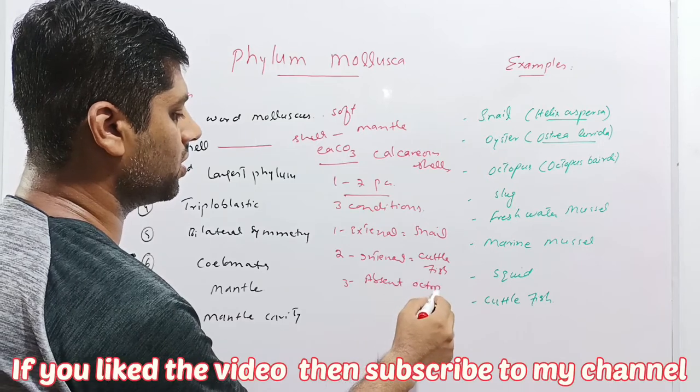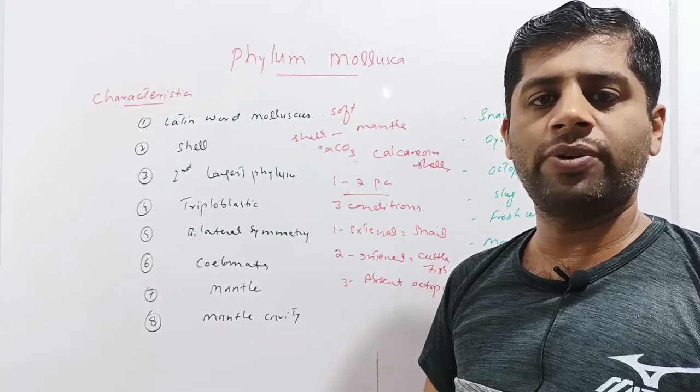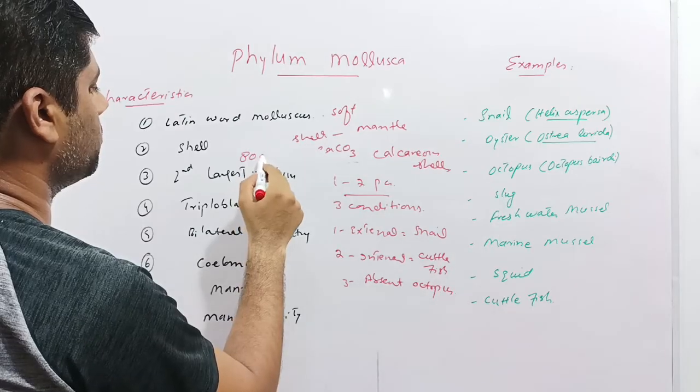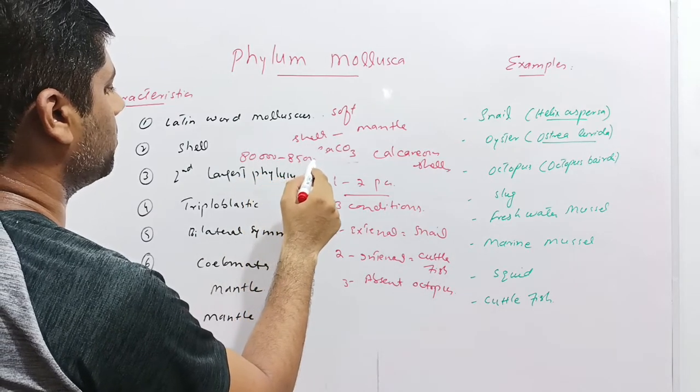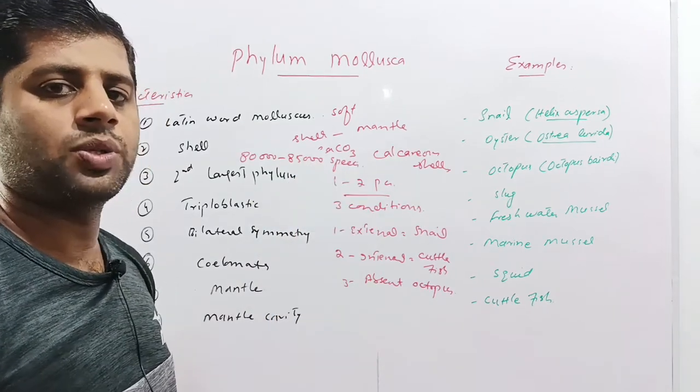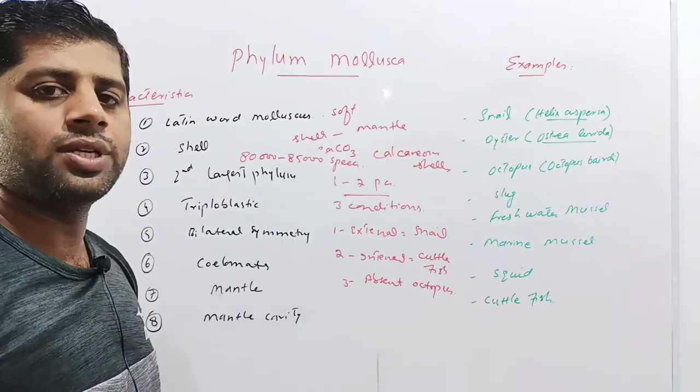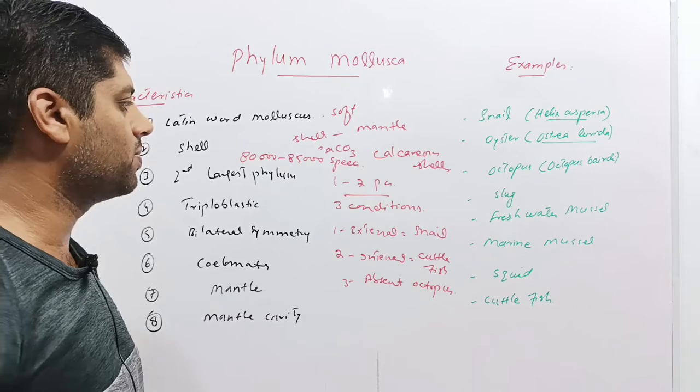The phylum mollusca is the second largest phylum of the invertebrates, comprising 80,000 to 85,000 species. While the first largest phylum is phylum arthropoda. Second to arthropods, the phylum mollusca is the second largest phylum of the kingdom animalia or invertebrates.